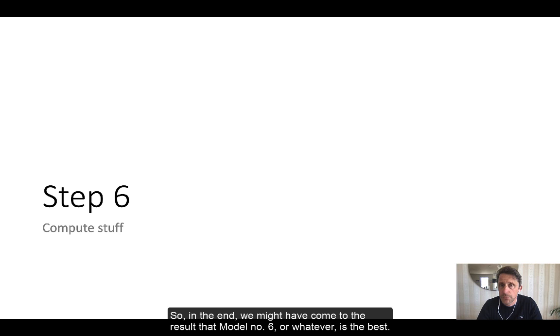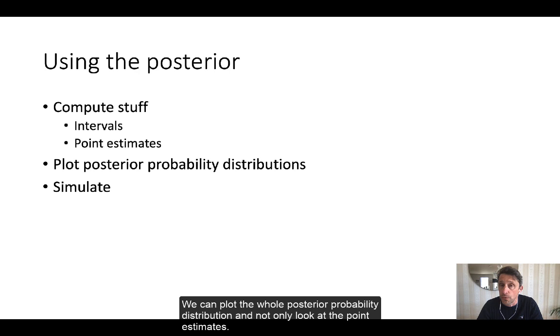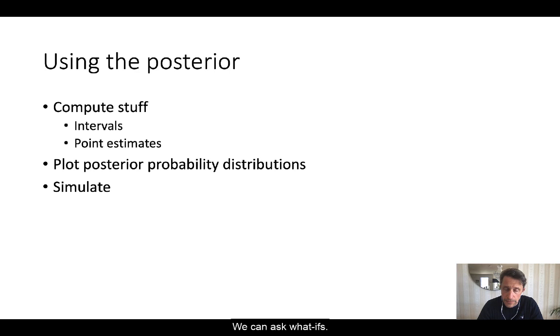So in the end, we might have come to the result that model number six or whatever is the best, and we start to compute stuff from our posterior probability distribution. We are using that model's posterior probability distribution. And we can compute many different things: intervals, point estimates. We can plot the whole posterior probability distributions and not only look at the point estimates.